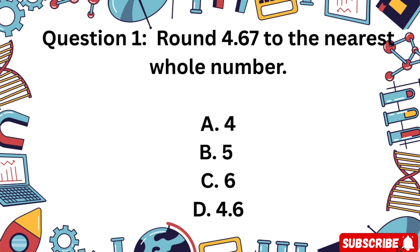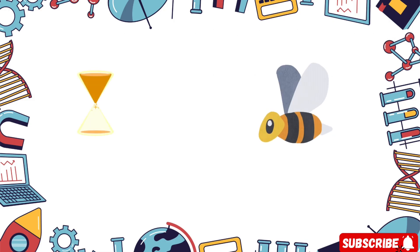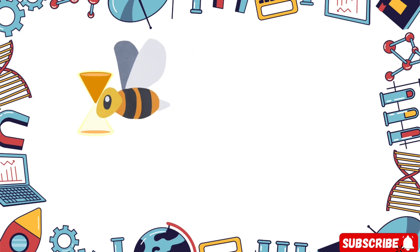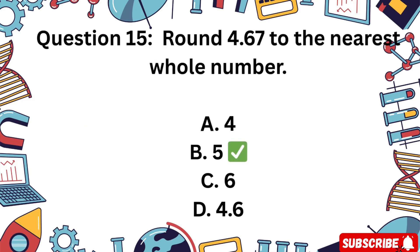Question 15: Round 4.67 to the nearest whole number. Is it A 4, B 5, C 6, or D 4.6? B is the correct answer. 4.67 rounds up to 5.